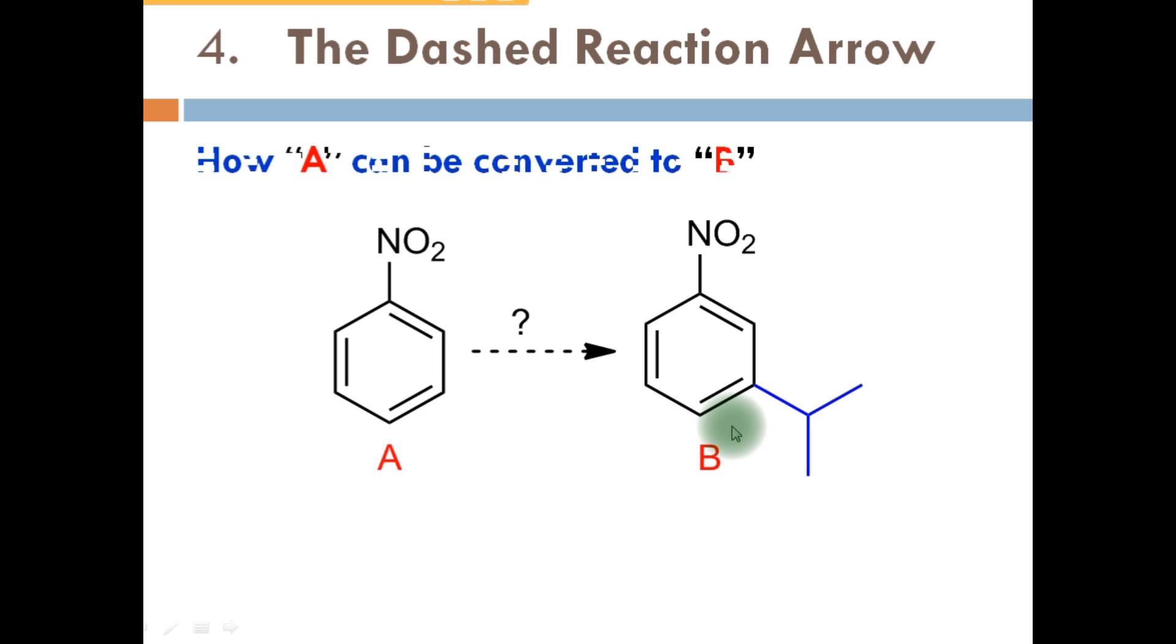The fourth is the dashed reaction arrow. How A is converted to B, what reactant you needed for the conversion of A into B. This dashed arrow is known for the theoretical step of the reaction.